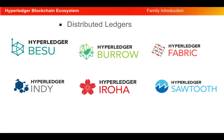Hyperledger Indy is a distributed ledger software that provides tools, libraries, and reusable components for providing digital identities. Hyperledger Iroha is designed to be simple and easy to incorporate into infrastructural or IoT projects requiring distributed ledger technology. Hyperledger Sawtooth is a distributed ledger software that helps smart contracts to specify business rules for applications without needing to know the underlying design of the core system.